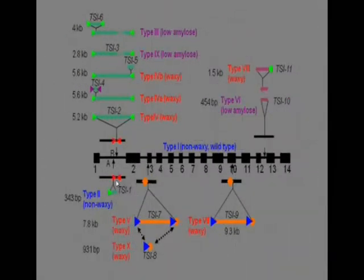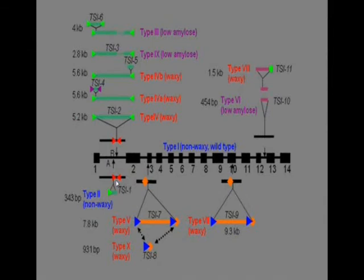SNP analysis. The waxy gene is the only gene that regulates the amylose content in foxtail millet. Mutations in the GBSS1 gene are known to be associated with the sticky i.e. the waxy type.